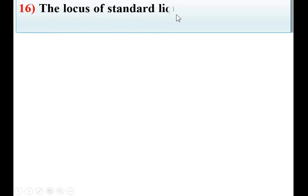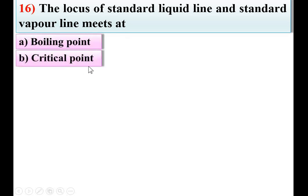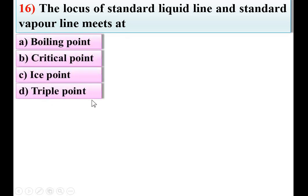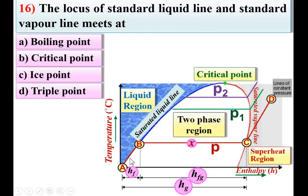Next: the locus where the saturated liquid line and saturated vapor line meet is option boiling point, critical point, ice point, or triple point. The saturated liquid line and saturated vapor line meet at one point, and that is known as the critical point. B is the right answer.